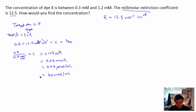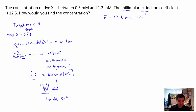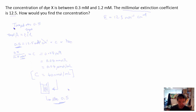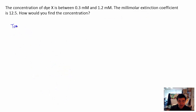What this tells us is that if we can get a concentration of 40 nanomoles per milliliter inside a cuvette, the absorbance should be 0.5 — that was the target absorbance we used in the calculation in the first place. So our target concentration is 40 nanomoles per milliliter.